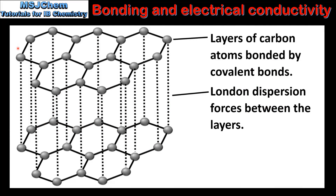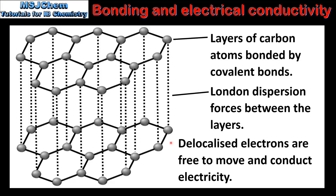Graphite is an exception because it has a giant covalent structure yet is a good electrical conductor. To explain why, we need to look at the structure. Graphite has a layered structure with layers of carbon atoms bonded by covalent bonds, held together by London dispersion forces. Each carbon atom is bonded to three other carbon atoms, which creates a spare electron for each carbon atom. These spare electrons are delocalized and free to move within the structure, therefore graphite is a good conductor of electricity.